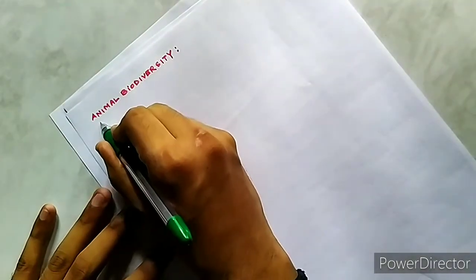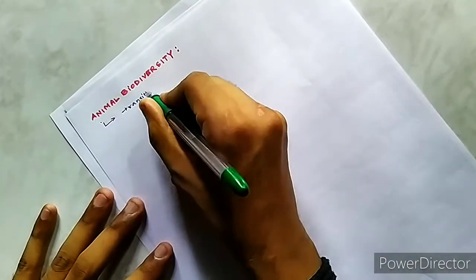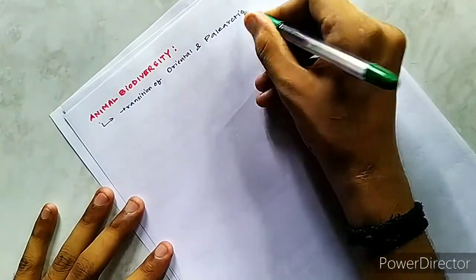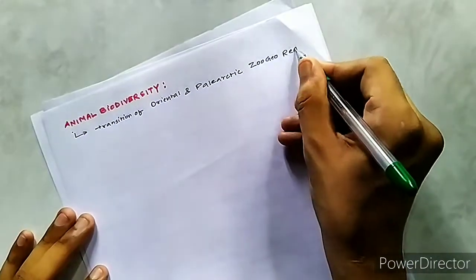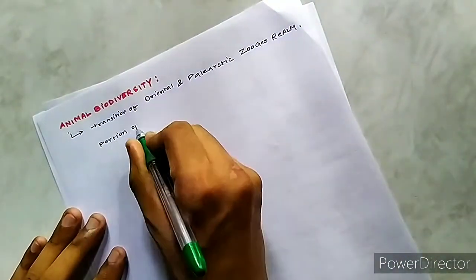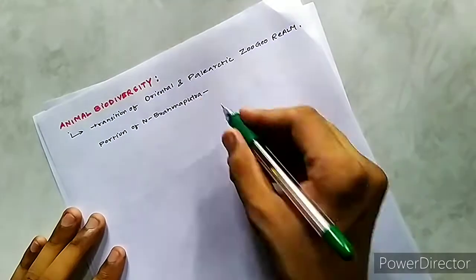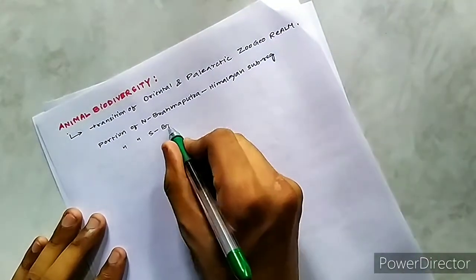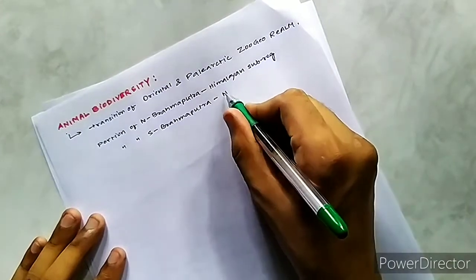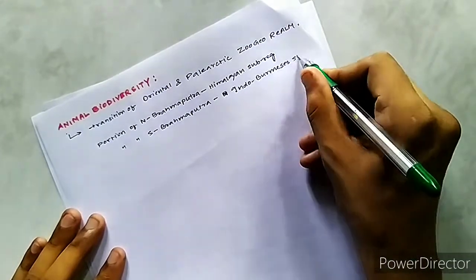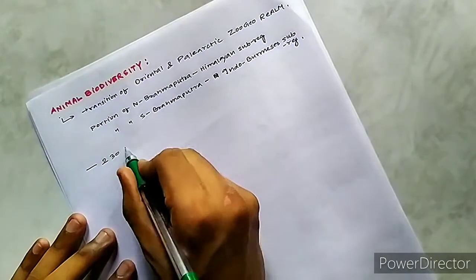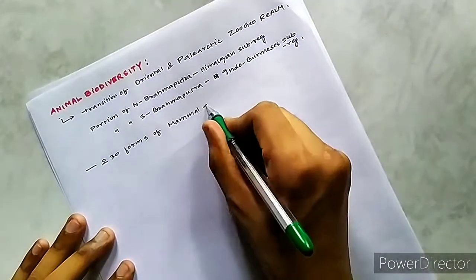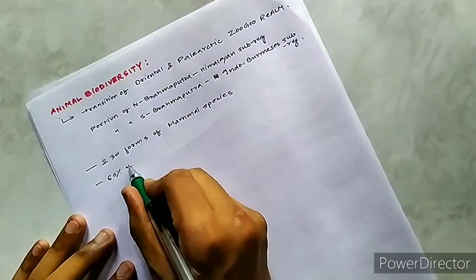Next we have animal biodiversity. We already stated that Assam lies between the transitional zone of Oriental and Palearctic geographical realm. The portion of North Brahmaputra is also called the Himalayan sub-region and the South Brahmaputra is called the Indo-Chinese sub-region, which both fall under the Oriental geographic realm.